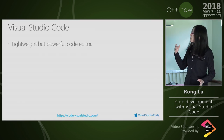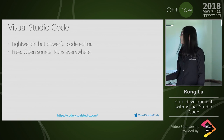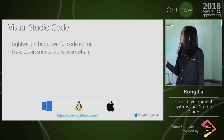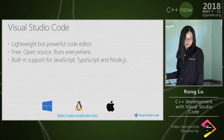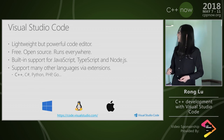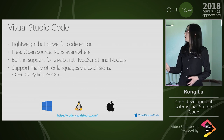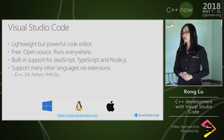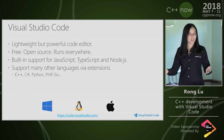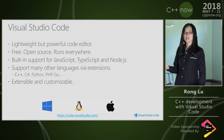Visual Studio Code is a lightweight but really powerful editor. It runs cross-platform on Windows, Linux, and Mac. It's completely free and open sourced. It has built-in support for JavaScript, TypeScript, and Node.js, but many other languages are also supported through extensions — including C++, C#, Python, PHP, Go, and many more. It's completely extensible and customizable.